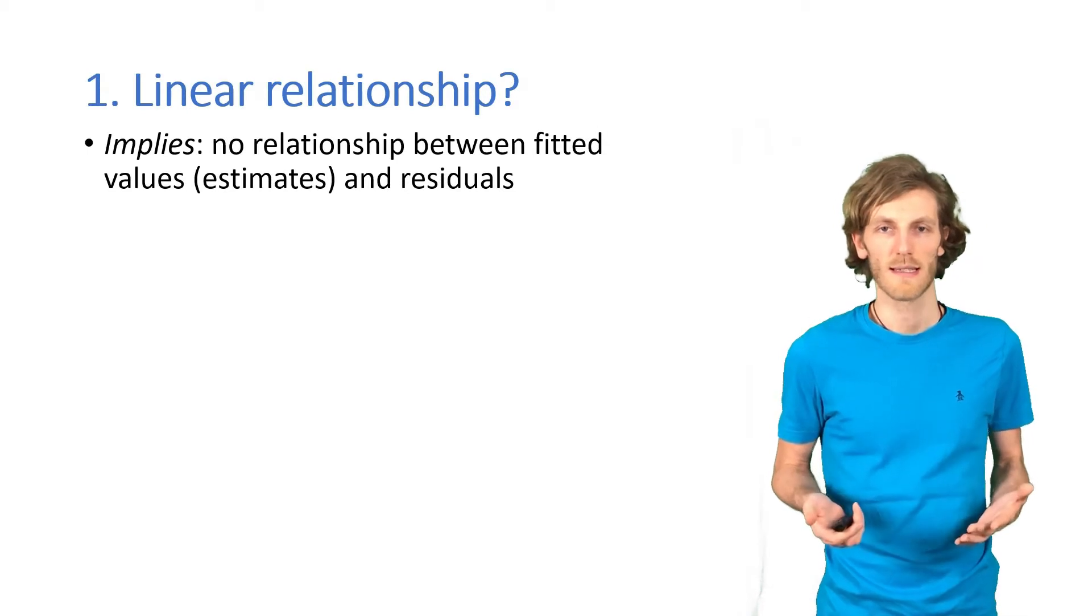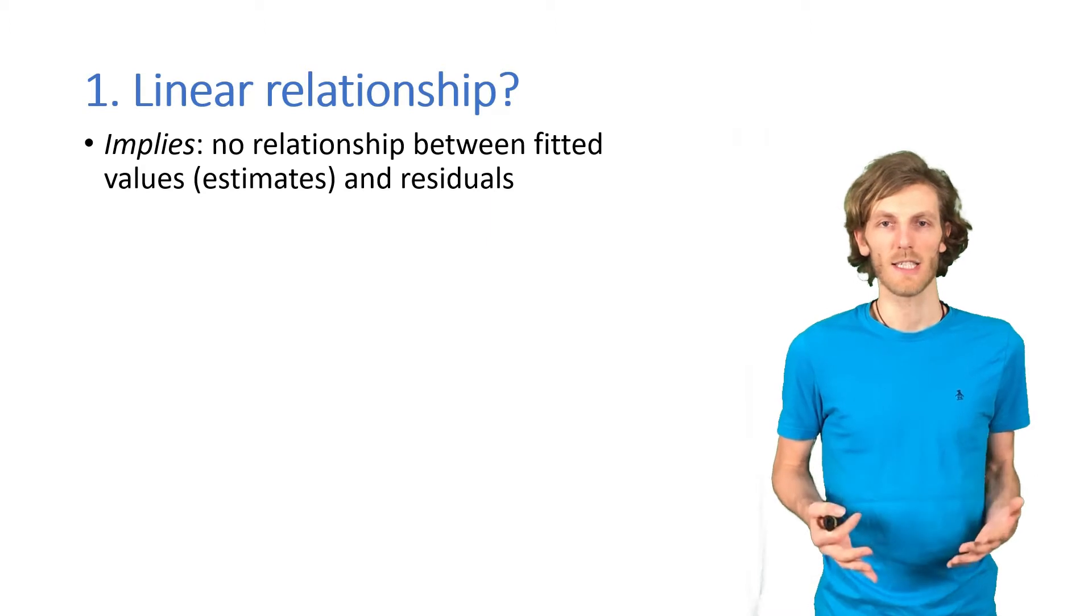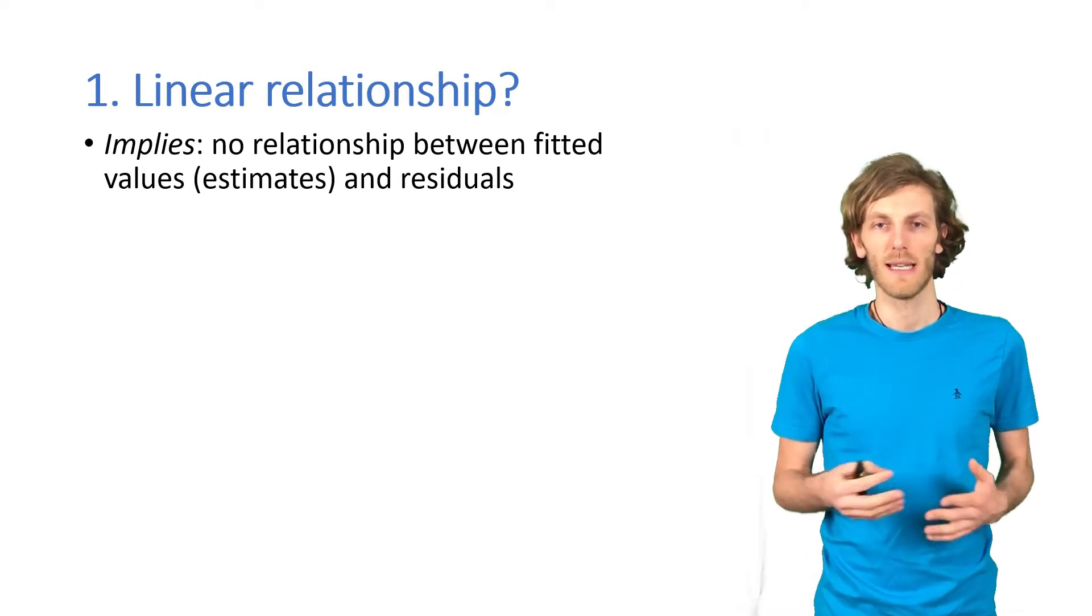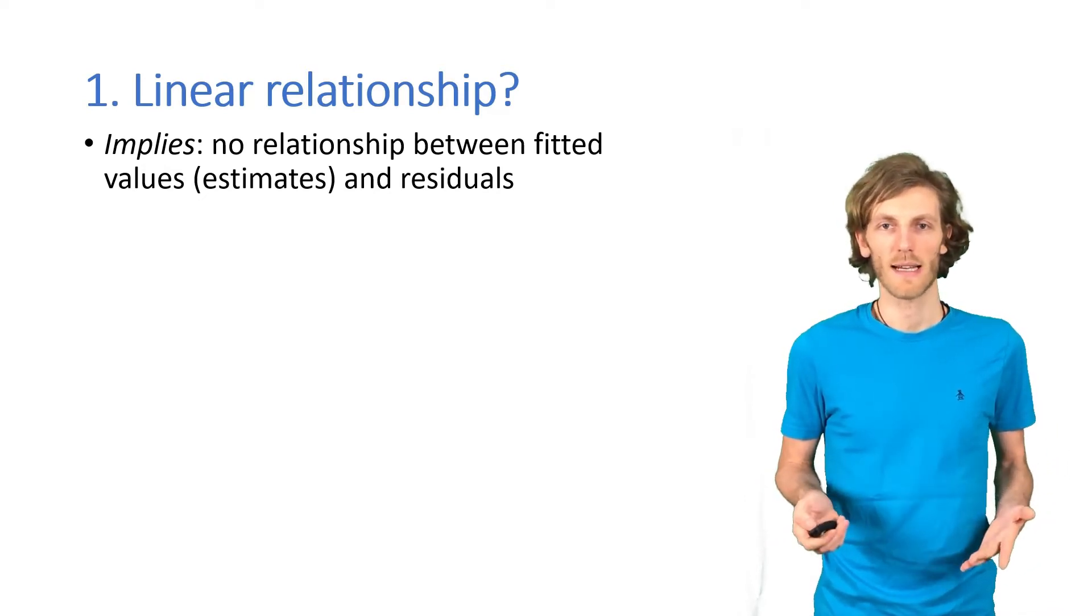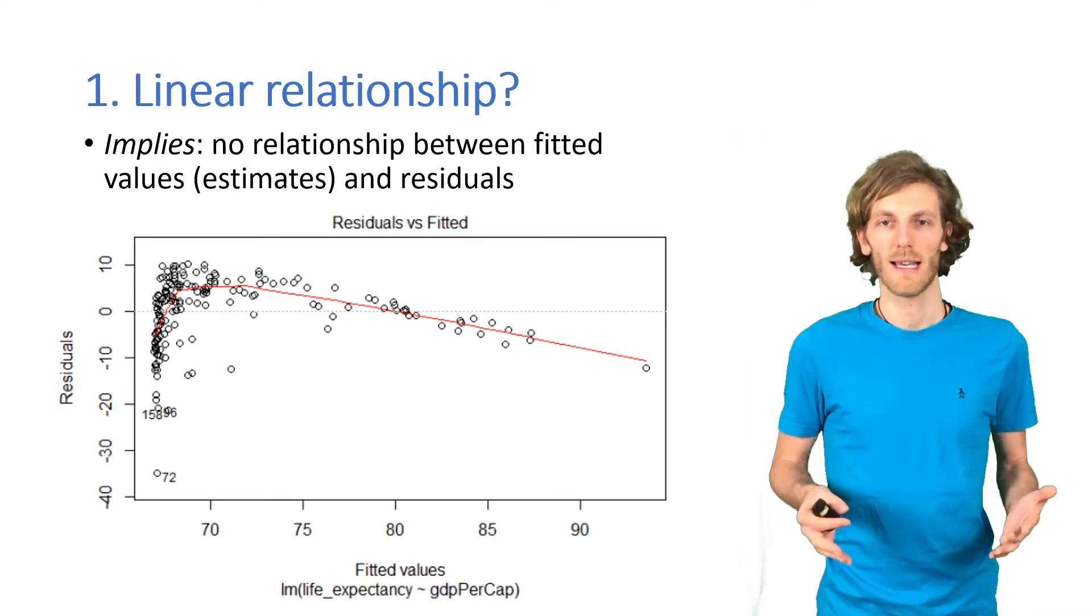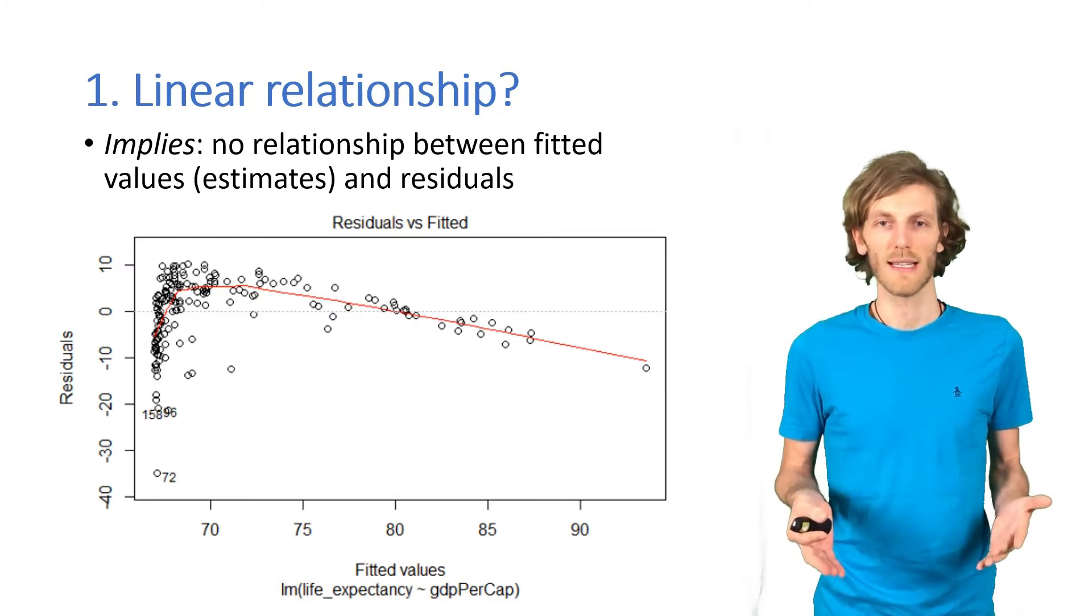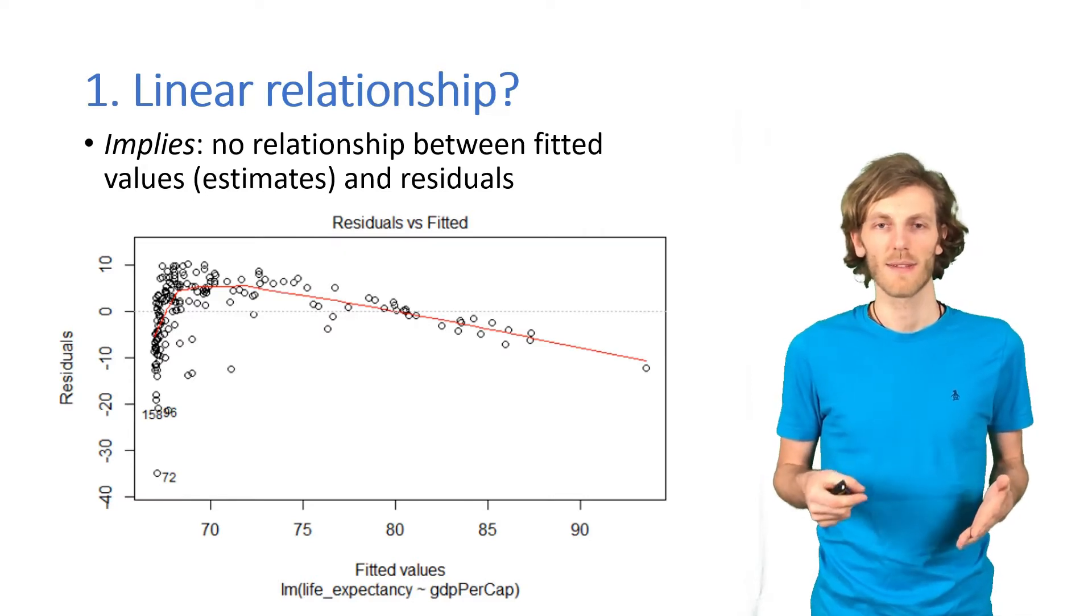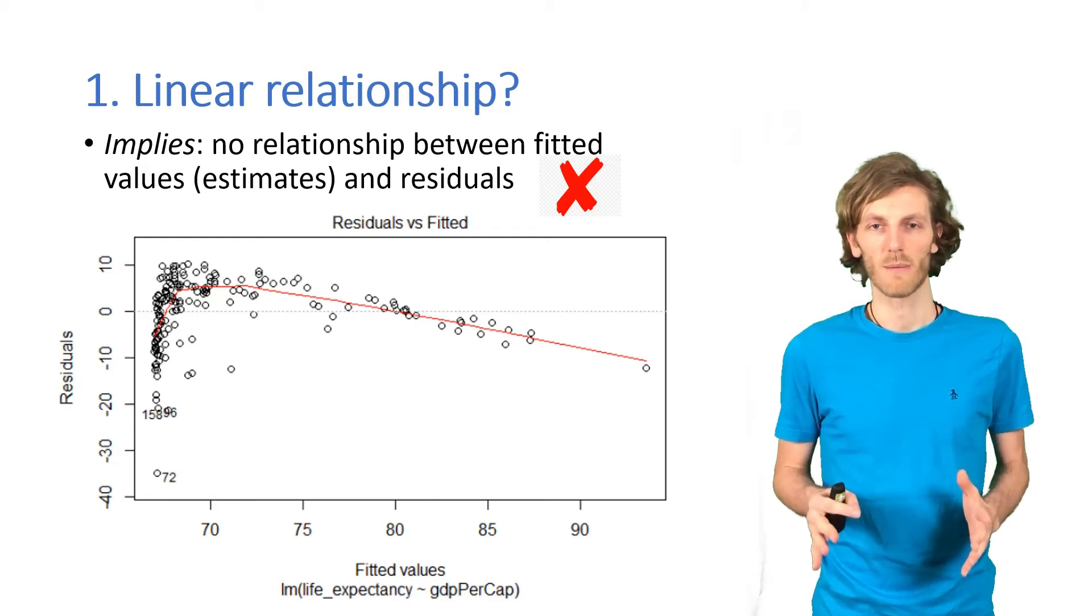So, the first of the plots helps us to see whether it is a linear relationship, because a linear relationship implies that there is no link between the fitted values, the model estimates, and the residuals, how far off they are. Clearly, in this particular case, that's not the case. The red line shows that it is a very strong link between the predictions and the residuals. So, this condition is not met, and we shouldn't be using the model.